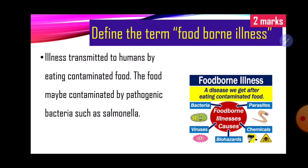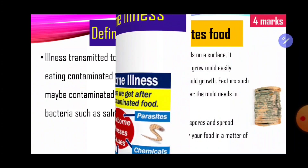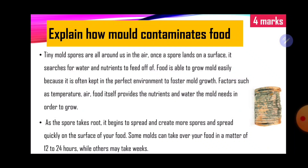Next question: define the term foodborne illness. Foodborne illness may be defined as illnesses transmitted to humans by eating contaminated food. The food may be contaminated by pathogenic bacteria such as Salmonella. Foodborne illness is any disease that one may suffer from because they ate food that has been contaminated — hence the name foodborne. That is worth two marks.